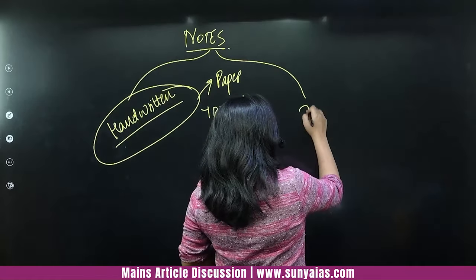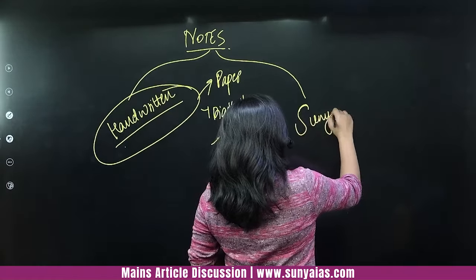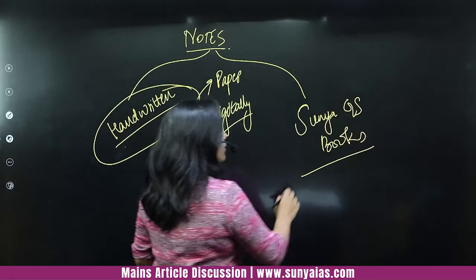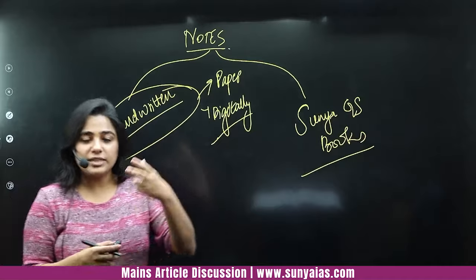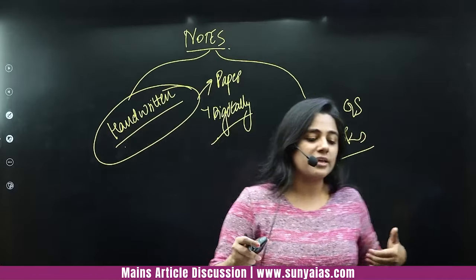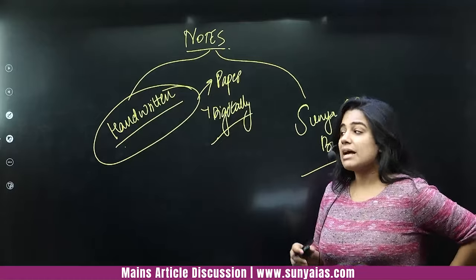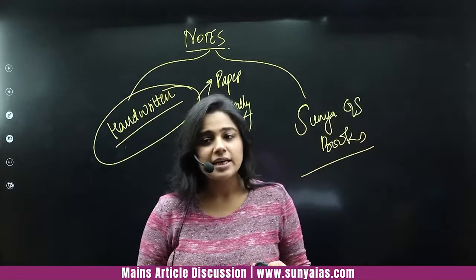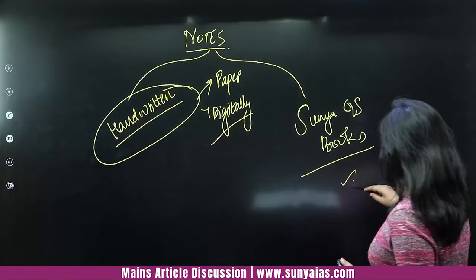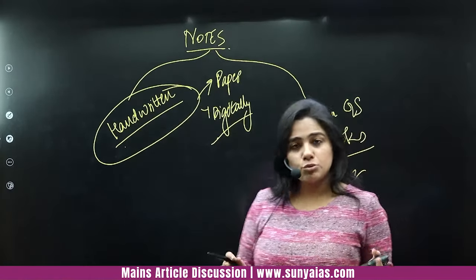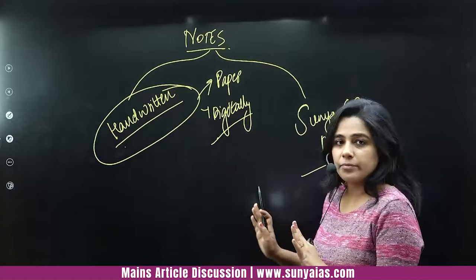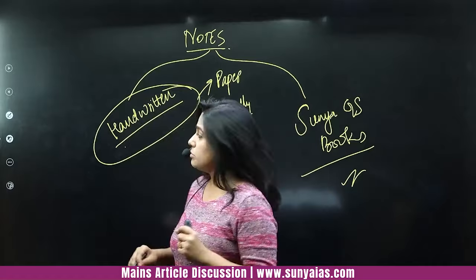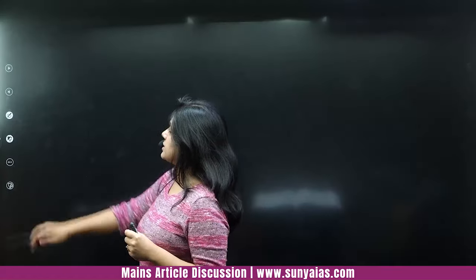The second way is to go for the Shunya GS books, wherein we have compiled every topic we teach. Every topic we are teaching is there in the Shunya books. For example, this health part is there in the GS2 book. You go for these books — they are already compiled, and if they suit you, you can order them, either all GS books or whichever paper you need.